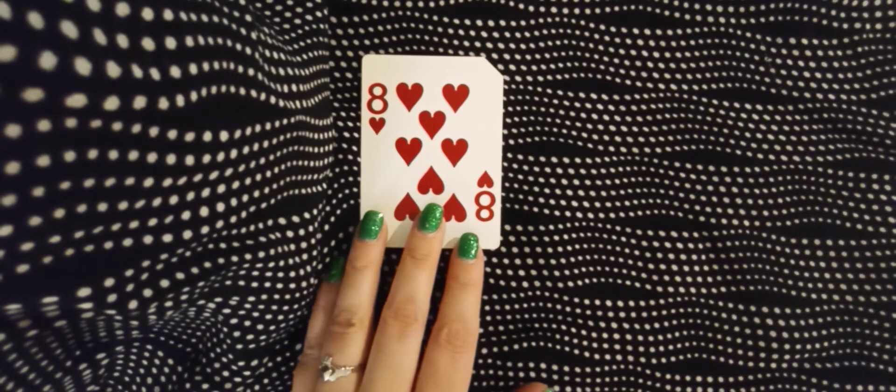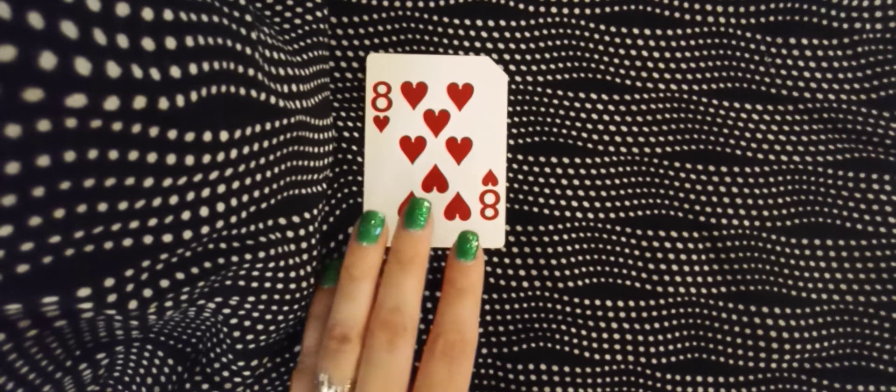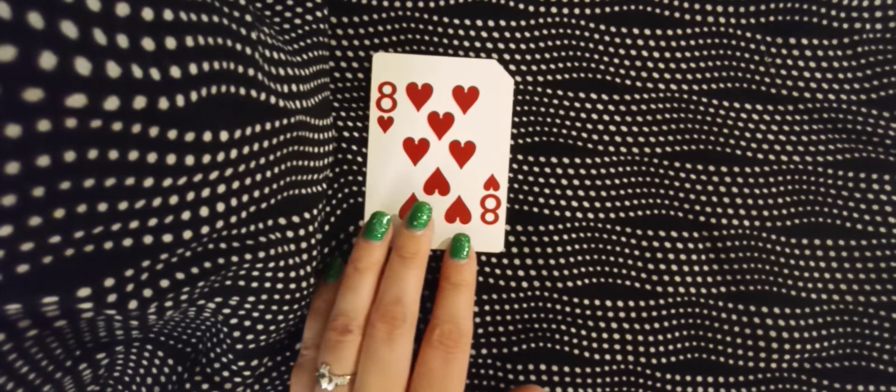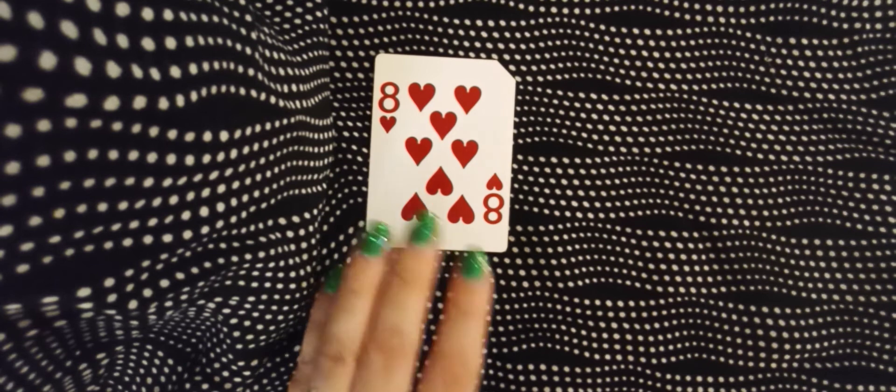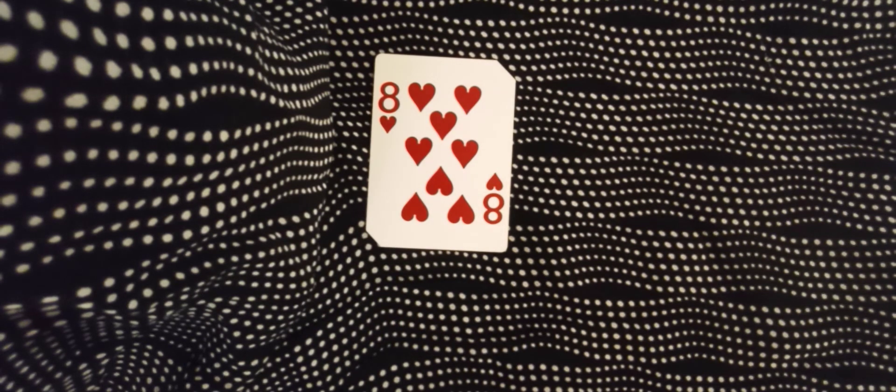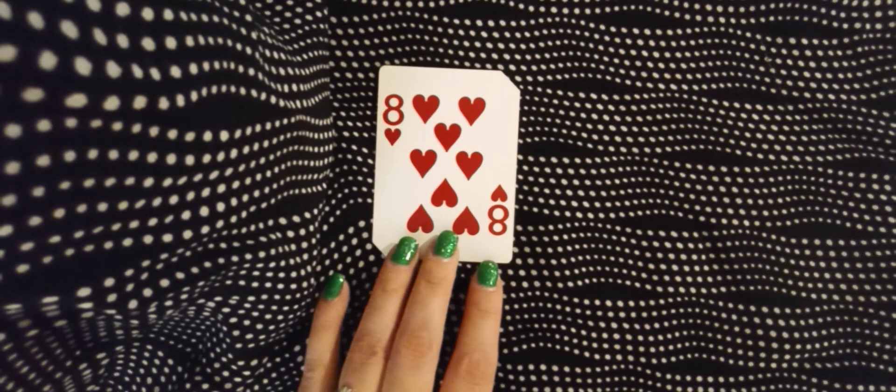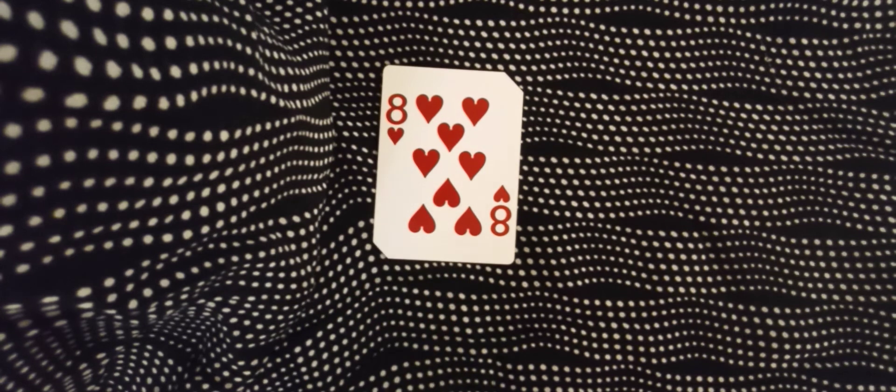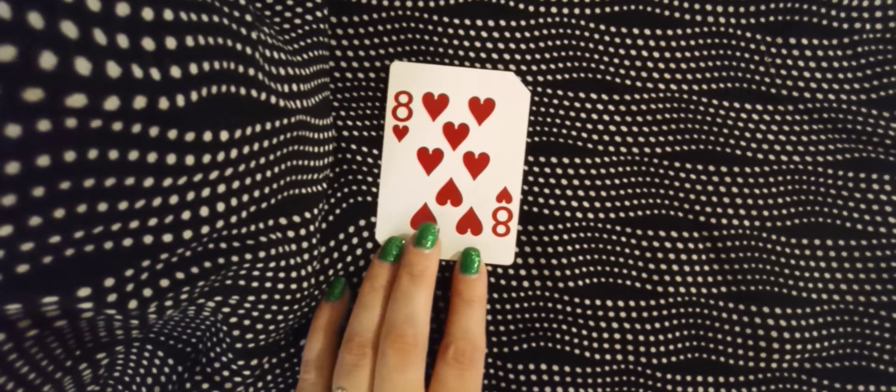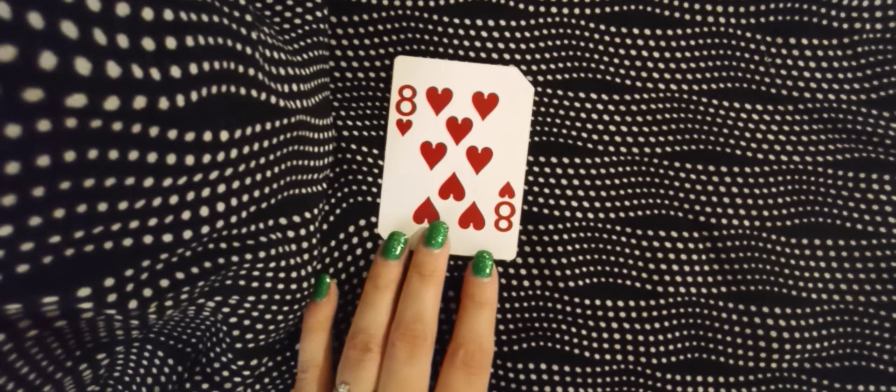This is the Eight of Hearts. This means that there's an upcoming maybe business adventure, romantic connection, and maybe you'll meet somebody at a social event. So this is about a social event and meetings upon something romantic, possibly meeting somebody at a social event or gathering and making a connection with somebody.